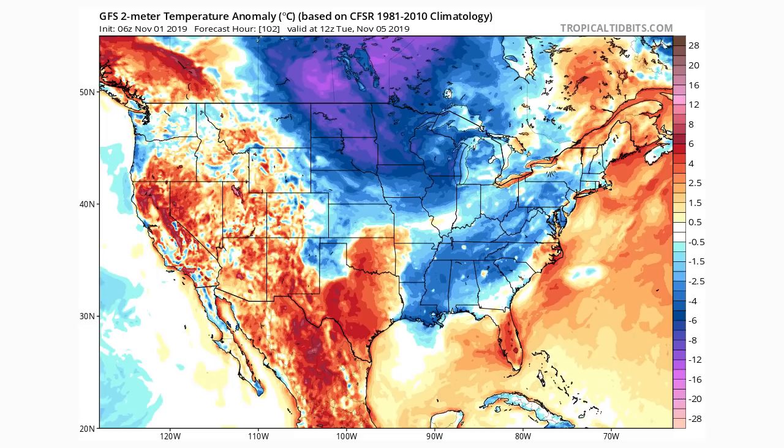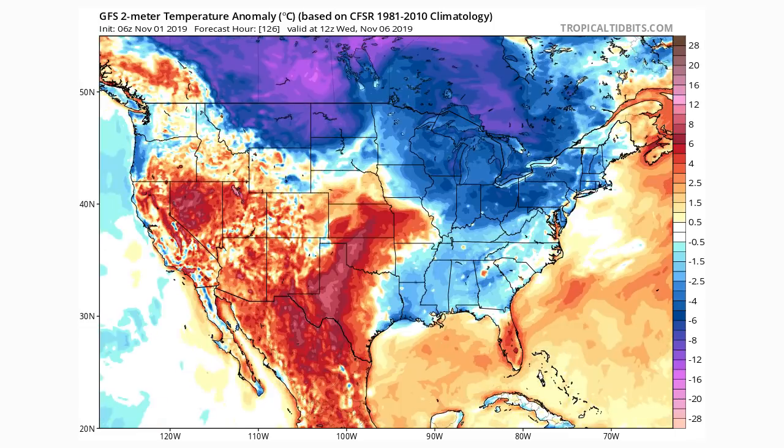By the 6th, the northeast starts to cool down and the mid-Atlantic cools a bit too, but again it's those light blues — they're sneaky because it's just going to feel around average. It's not actually going to feel that cold.